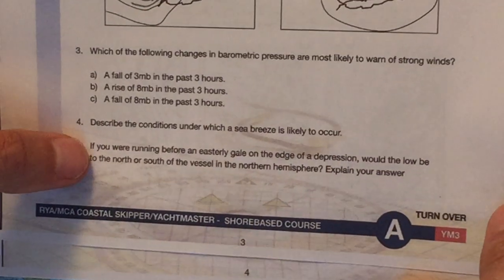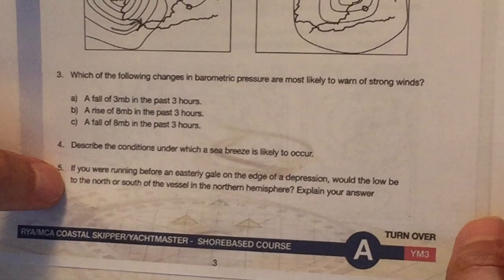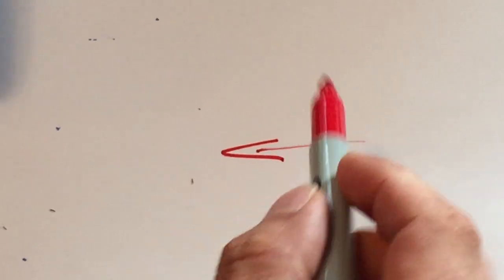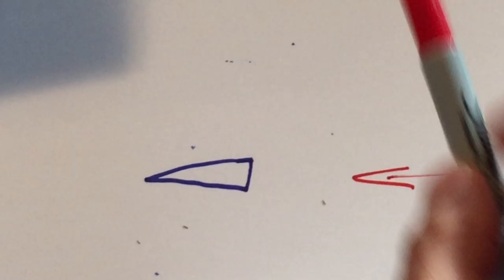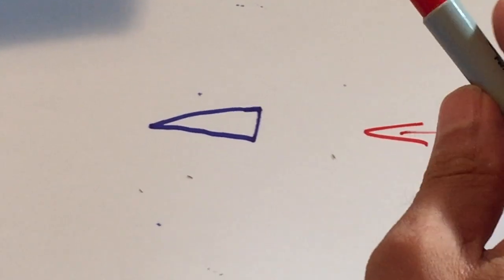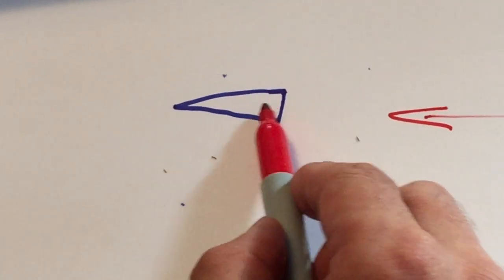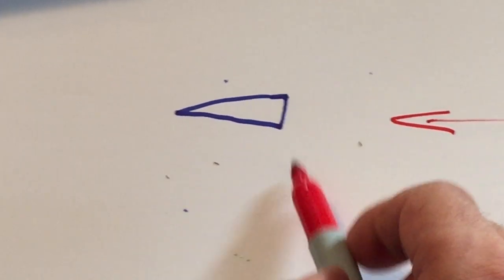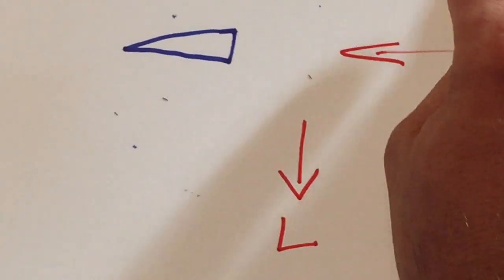If you were running before an easterly gale on the edge of a depression, would the low be to the north or south of the vessel? Okay, so here is our wind. Okay, from the east. Here is our vessel. We're running before it, so it means our back, the stern is to the wind. Buys Ballot's law says if you stand and face the wind, the low will be to your right. So I'm going to turn around on the boat, face the wind. So it means the low is down here. So the low would be to the south.